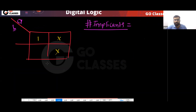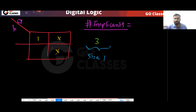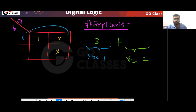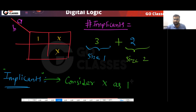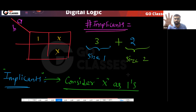If you want to find implicants or prime implicants, the don't cares are also considered. How many implicants of size one? Total three implicants of size one. How many implicants of size two? Total two implicants of size two. When finding implicants, consider don't cares as ones.